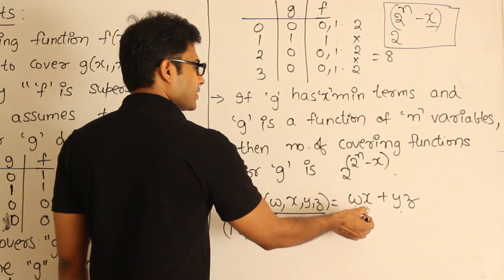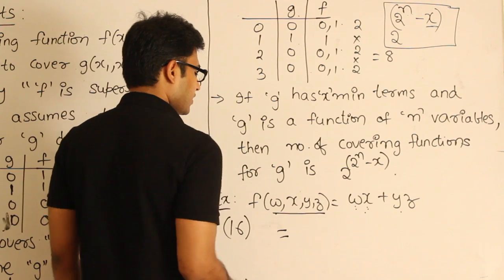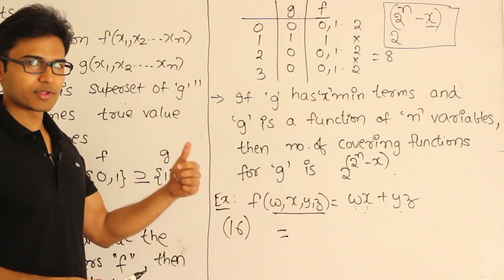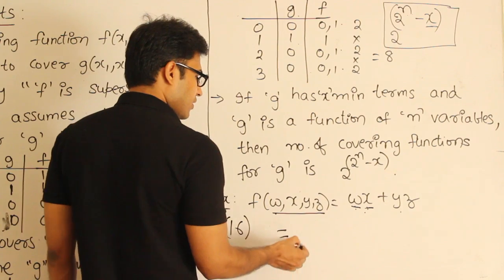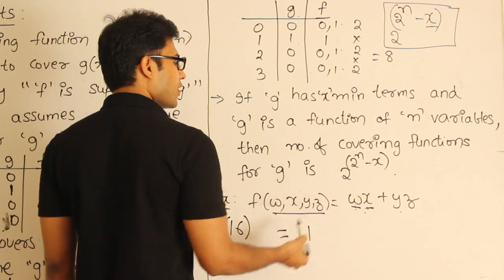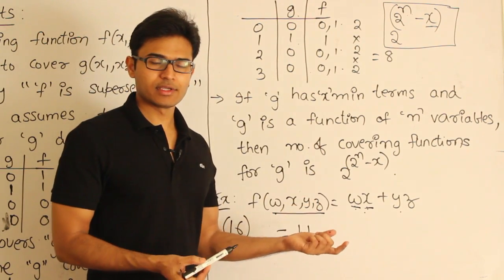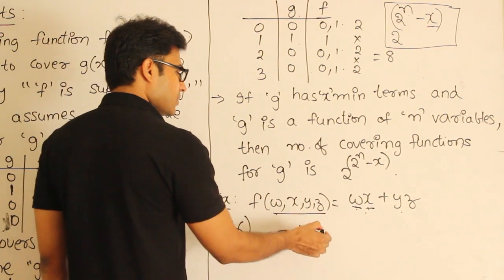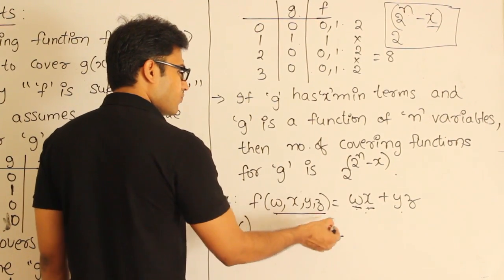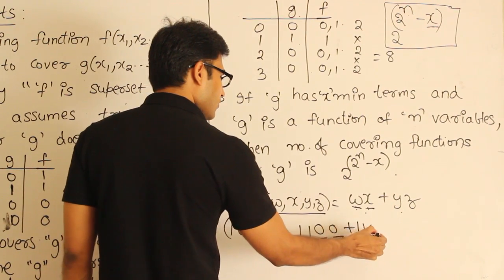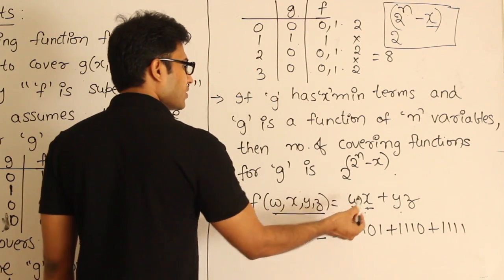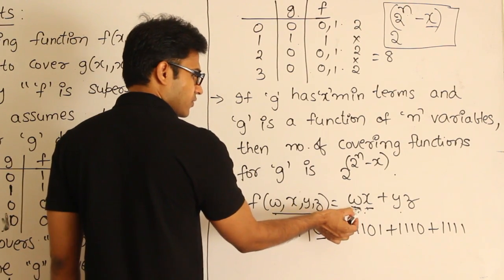In wx, two variables are missing: y and z. So wx is one product term with y and z missing, meaning wx followed by all combinations of y and z — (1,1,0,0), (1,1,0,1), (1,1,1,0), (1,1,1,1). I am telling you a method by which you can quickly arrive at the minterms: in place of w and x, I put 1,1 because both are non-complemented, and in place of y and z you get four combinations. These are all the minterms generated from the term wx.